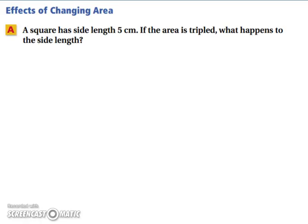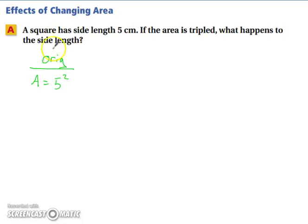Let's get more challenging. A square has a side length of 5 centimeters. If the area is tripled, what happens to the side length? The area of the original is 5 squared, which is 25. Since the area is tripled, we multiply 25 by 3 to get a new area of 75.